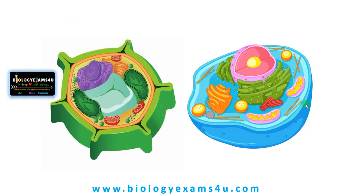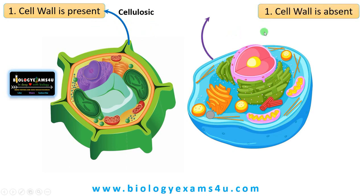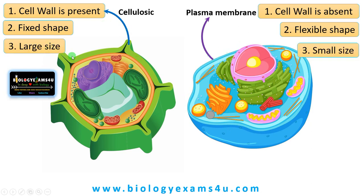Now let us understand the differences. First, plants have a cellulosic cell wall, whereas in animal cells the cell wall is absent and the outermost layer is the plasma membrane. Because the cell wall is present, plant cells are fixed in shape, whereas animal cells are flexible. Plant cells are also large in size, approximately 10 to 100 micrometers, whereas animal cells are comparatively small, ranging from 10 to 30 micrometers.